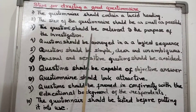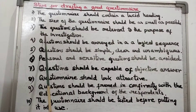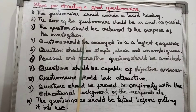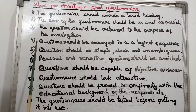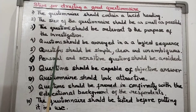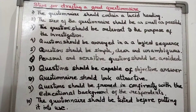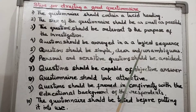The third point is that the questions should be relevant to the purpose of the investigation. No unnecessary questions should be included in the questionnaire. The fourth point is that questions should be arranged in a logical sequence — that is, in a proper order. For any survey, we first ask the individual's name, then age, then gender, and not directly about income.